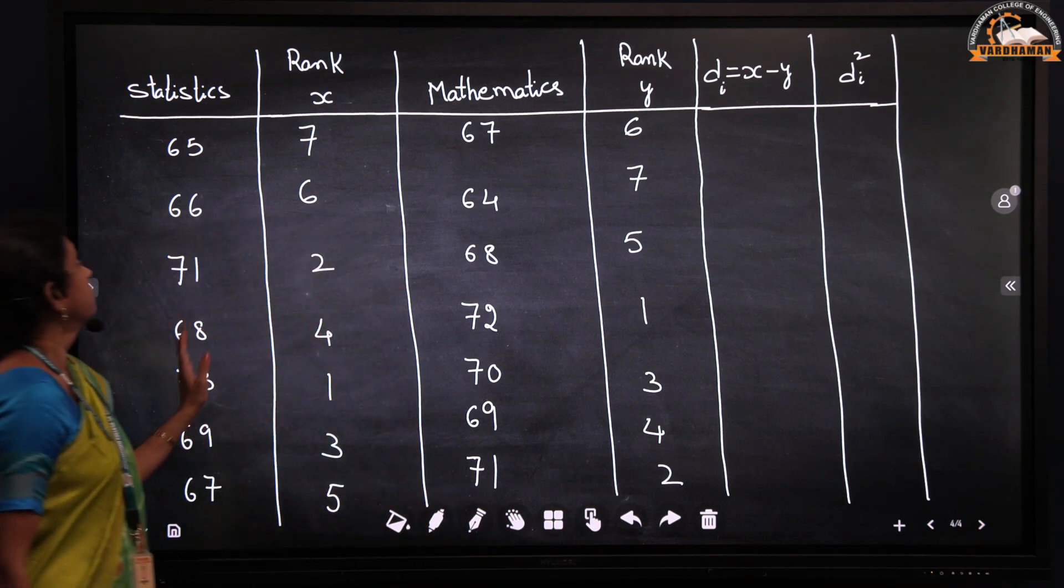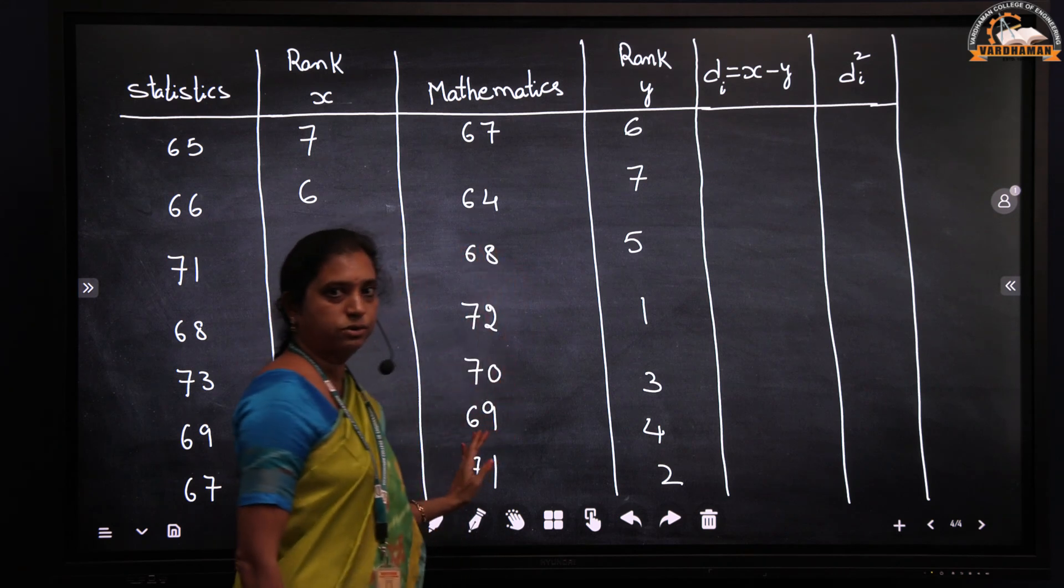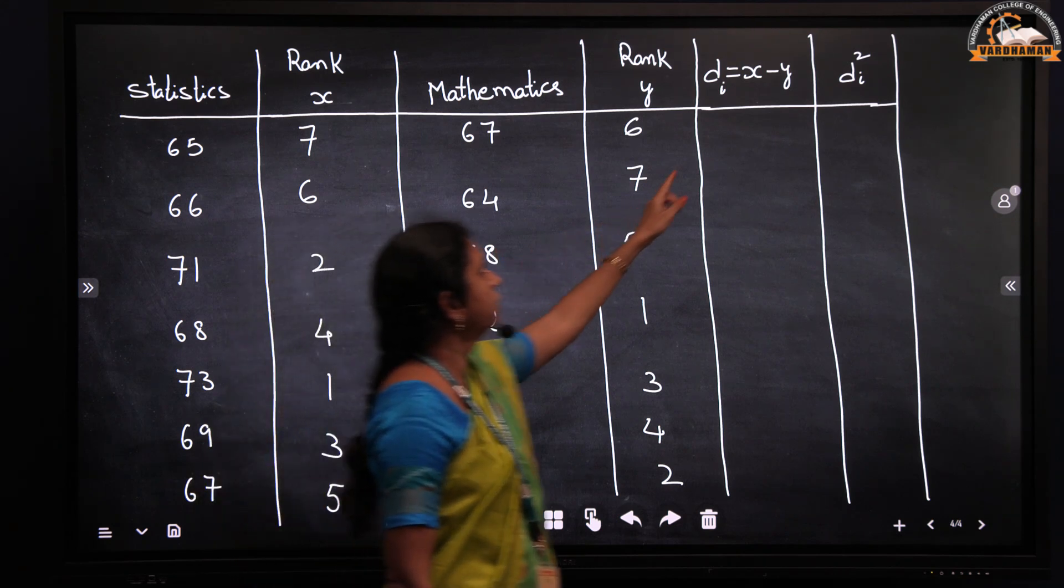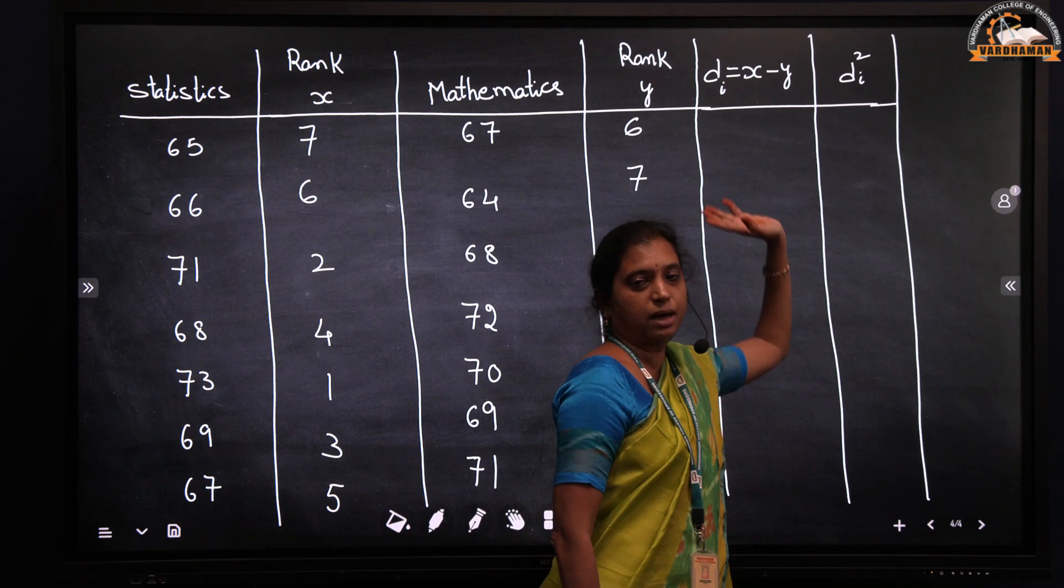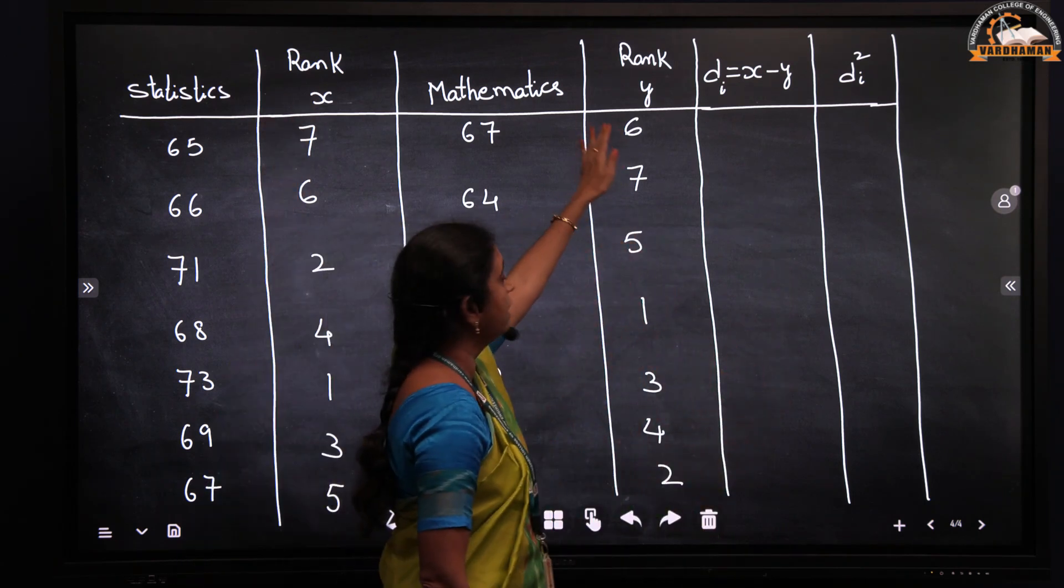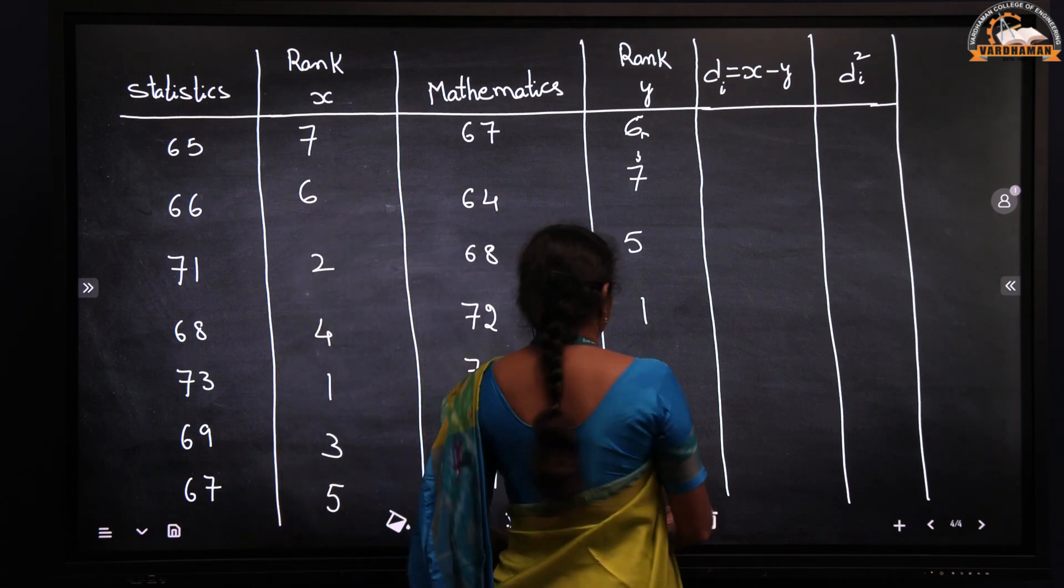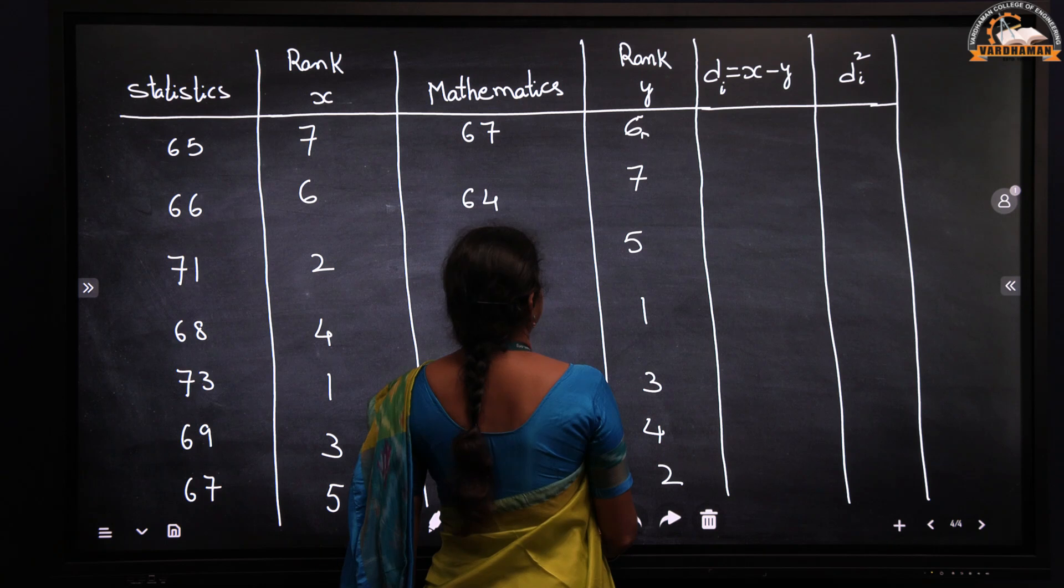So ranks for statistics marks is allotted and ranks for mathematics also is allotted. Now we have to find out the difference between these ranks. So we take di as x minus y, the difference between the two ranks.